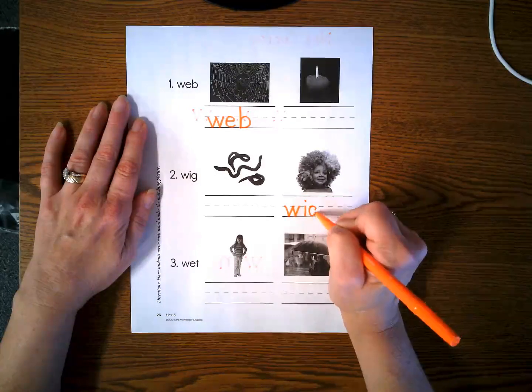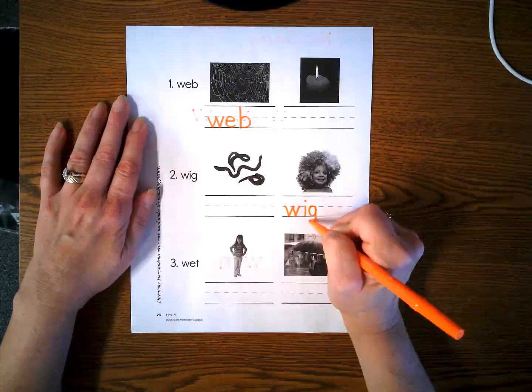G starts like a C. Go around, up, down, monkey tail.